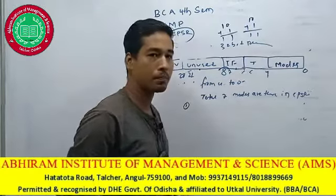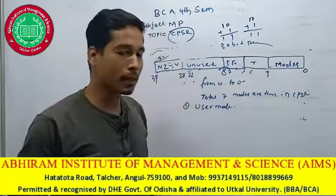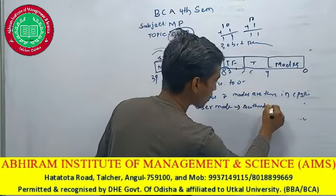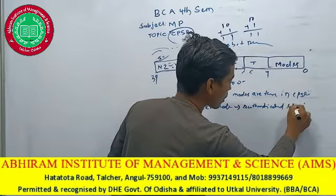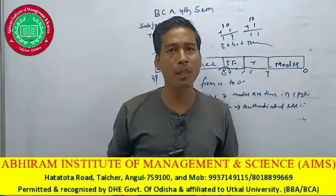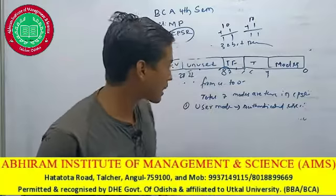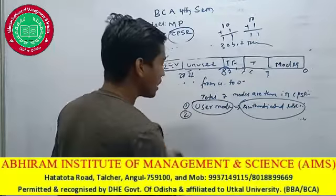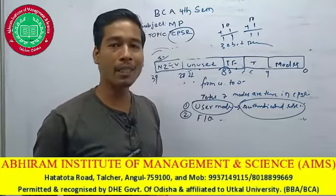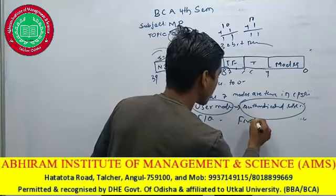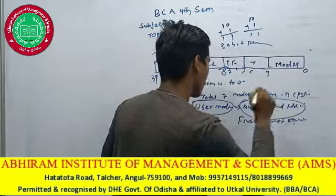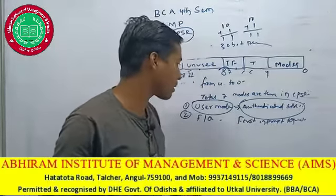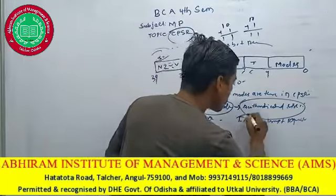The first mode is User Mode. User Mode can access only authenticated users — those users having proper identification, like an ID card that gives you identification. So User Mode is like this — it handles authenticated users. The second mode is FIQ, which stands for Fast Interrupt Request.